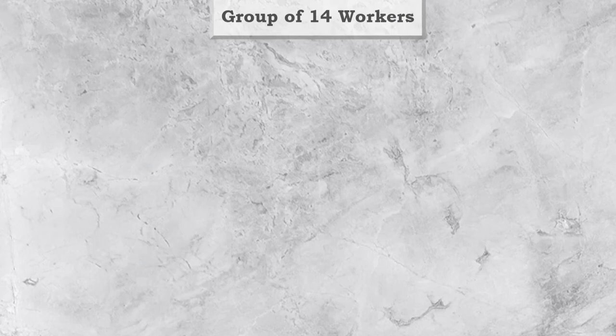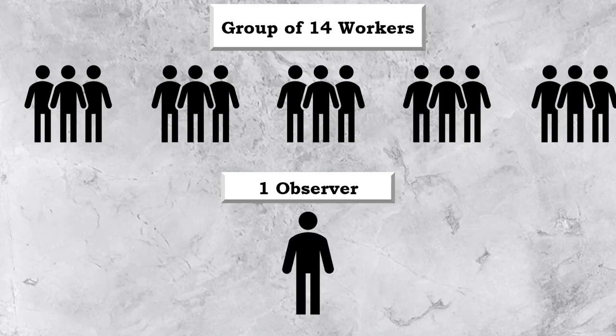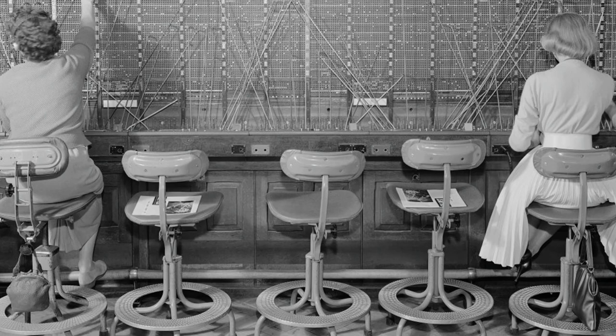The next experiment was the bank wiring observation room experiment. These experiments were conducted to find out the impact of small groups on the individuals. In this experiment, a group of 14 male workers were formed into a small work group and there was an observer involved. The men were engaged in the assembly of terminal banks for the use in telephone exchanges. The work involved attaching wire with switches for certain equipment used in telephone exchanges. The average wage was fixed on the basis of average output of each worker.